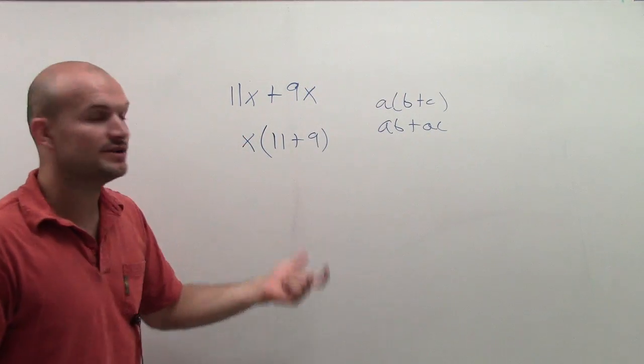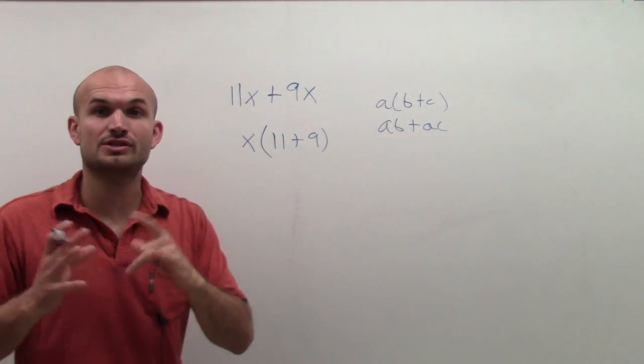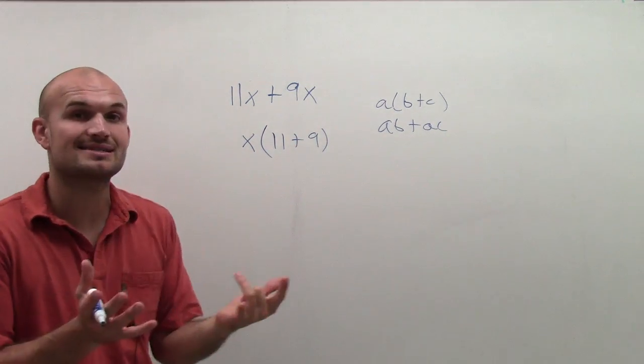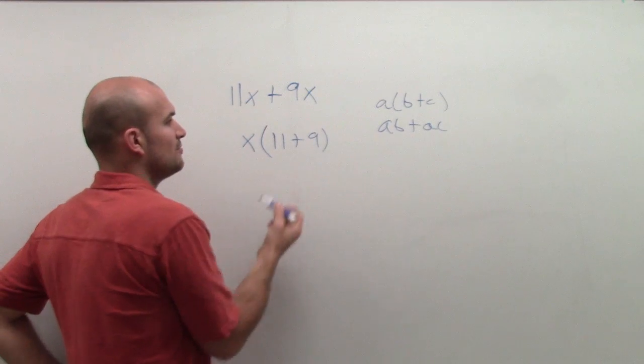Well, now if you just wanted to simplify using order of operations, you want to simplify inside the parentheses, you could say 11 plus 9 is 20.